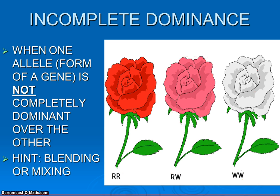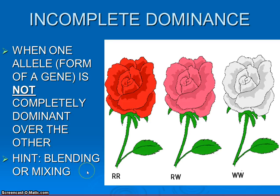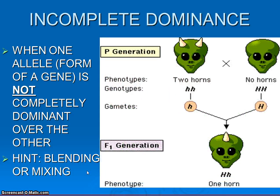Which is somewhat similar to co-dominance, but yet it is different. We need to be careful and not get these guys mixed up. Just to use a fun example — aliens. In this species of alien, there's a gene that controls whether or not they have horns. If they have two little h's, two recessive alleles, they have two horns. If they have two capital H's, different forms of the alleles, they have no horns.